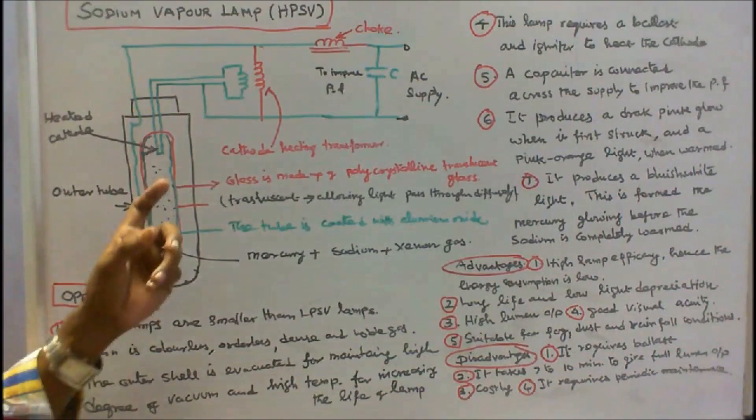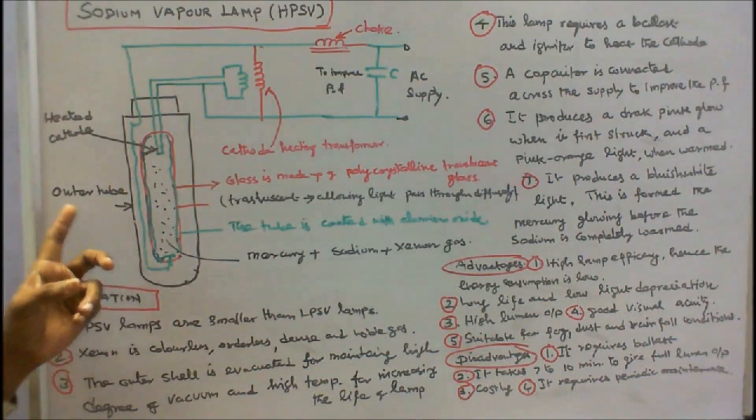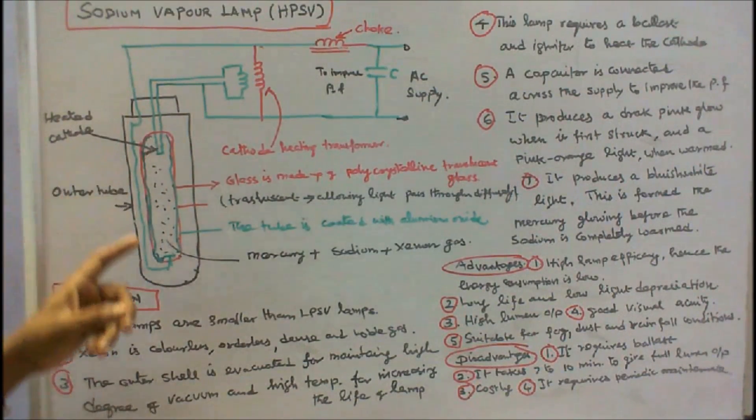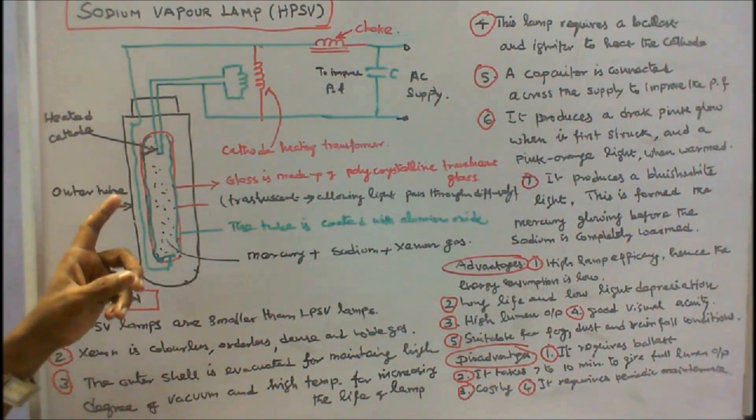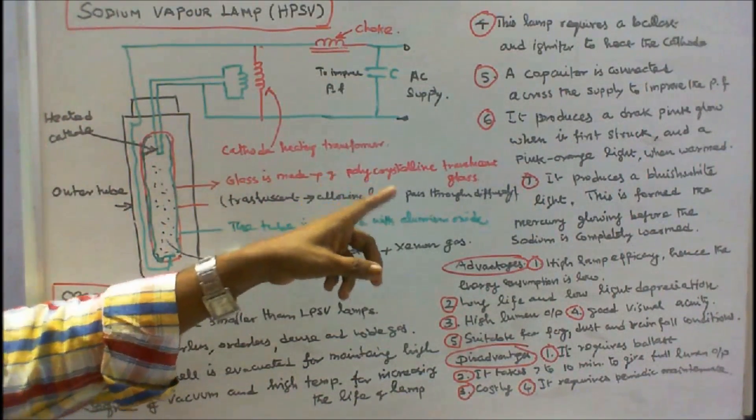High pressure sodium vapor lamp contains two glass tubes. One is outer glass tube which is made up of ordinary glass. Inner glass tube or discharge tube is made up of polycrystalline translucent glass.